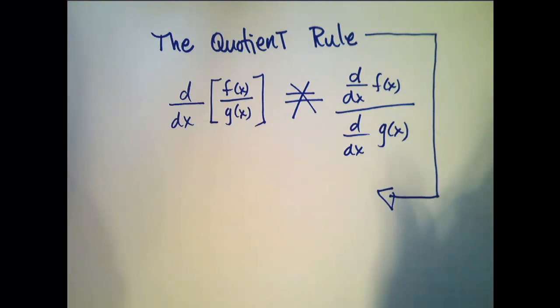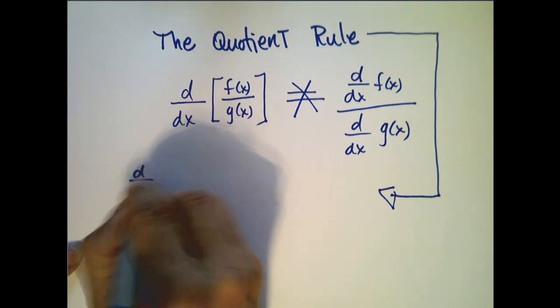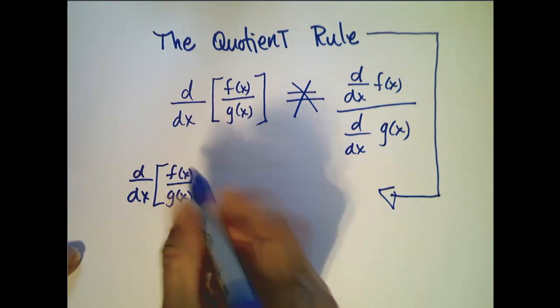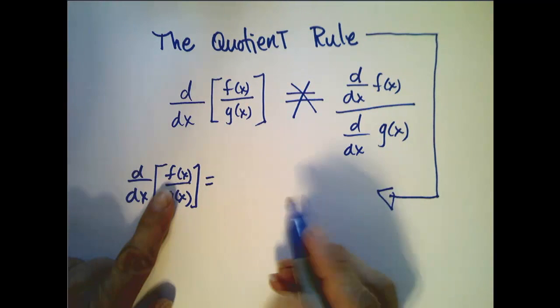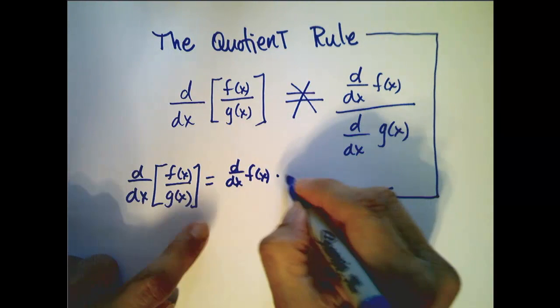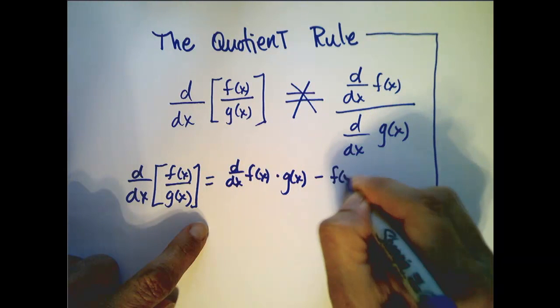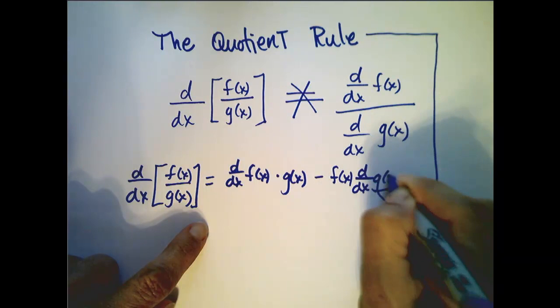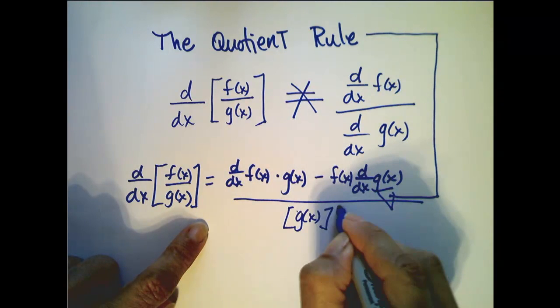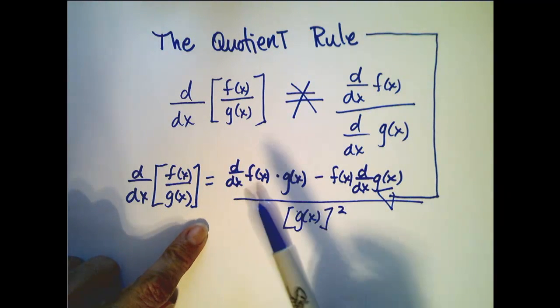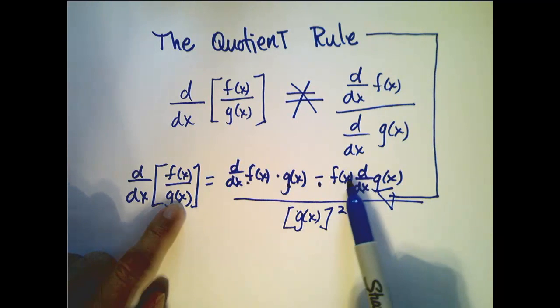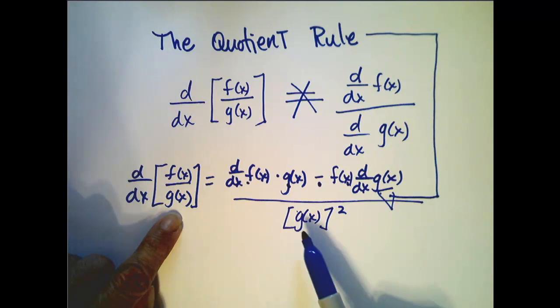Let me state what the quotient rule is. The derivative of f(x) over g(x) is equal to the derivative of the top times the bottom minus the top function times the derivative of the bottom function, all over the bottom function squared. Let me restate that: the derivative of the top times the bottom minus the top times the derivative of the bottom, all over the bottom squared.